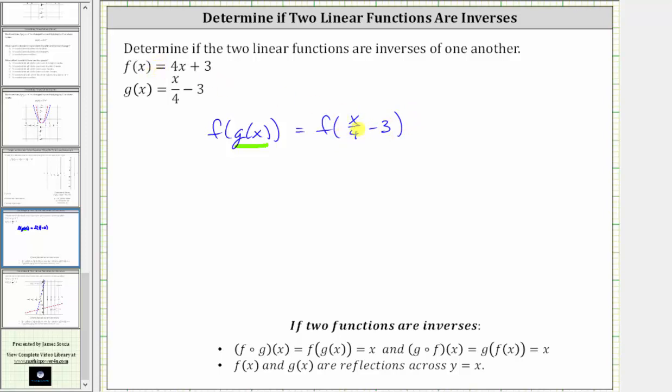And now the input of the function f is going to be x divided by four minus three, and because f of x equals four x plus three, f of the quantity x divided by four minus three is going to be four times the quantity x divided by four minus three, and then we still have plus three.